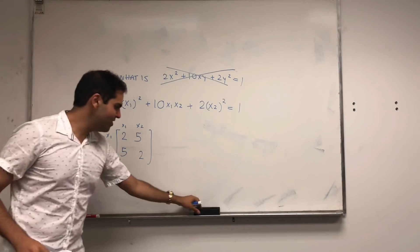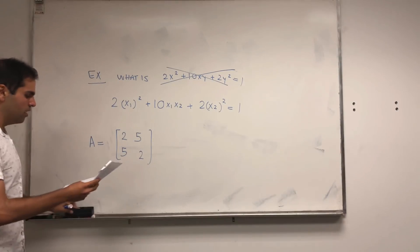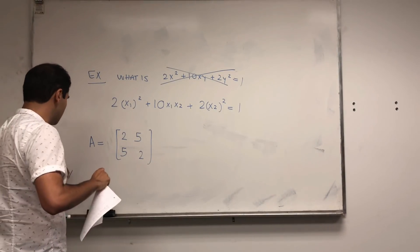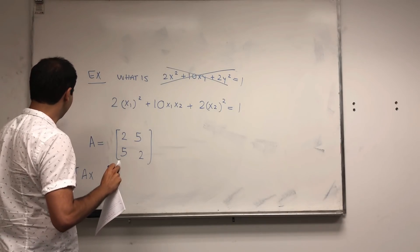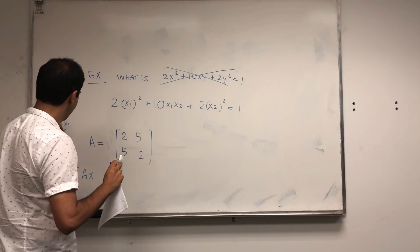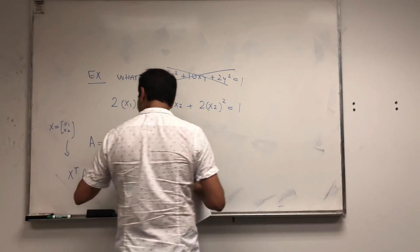So let A be this matrix, and why is that useful? So the question is, what is X transpose AX, where X is just a vector X1, X2?